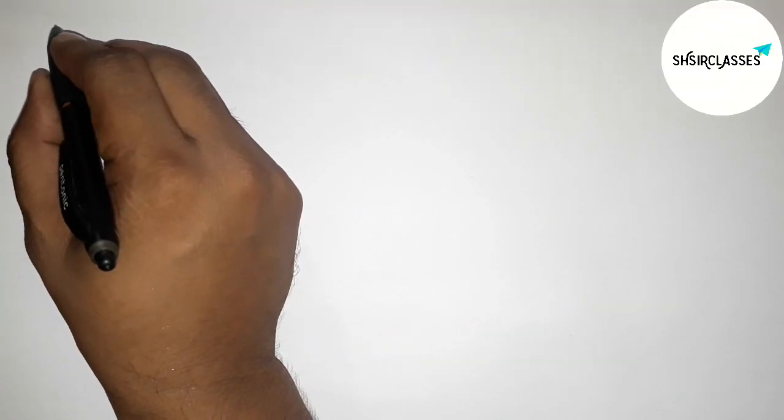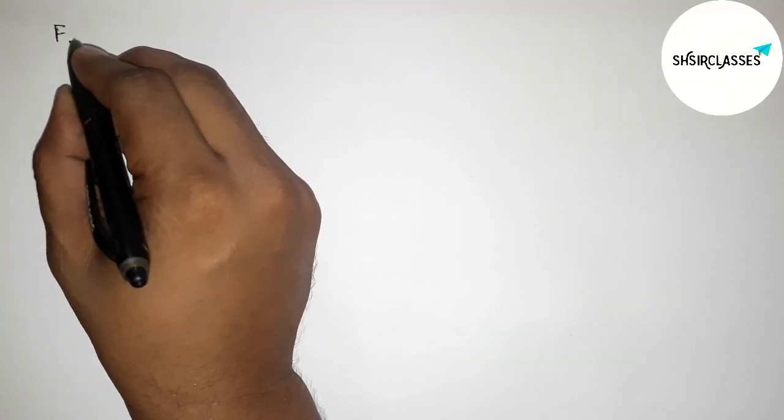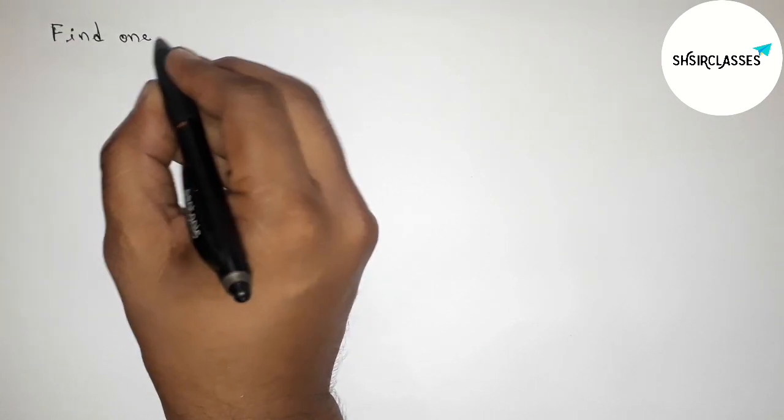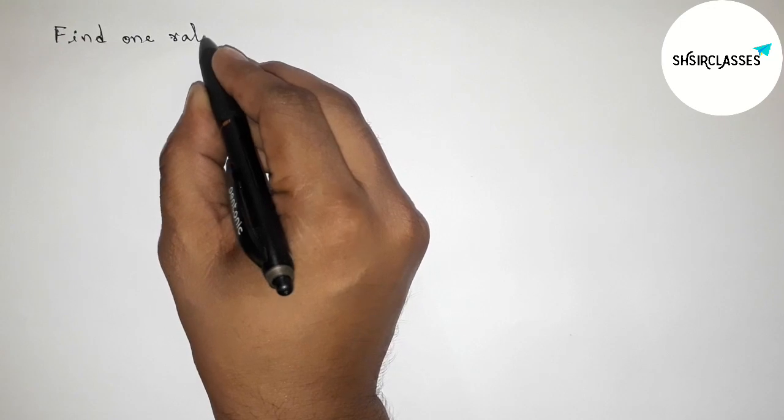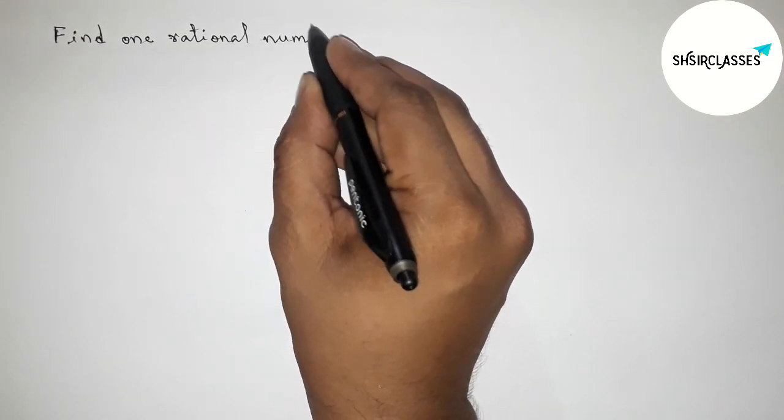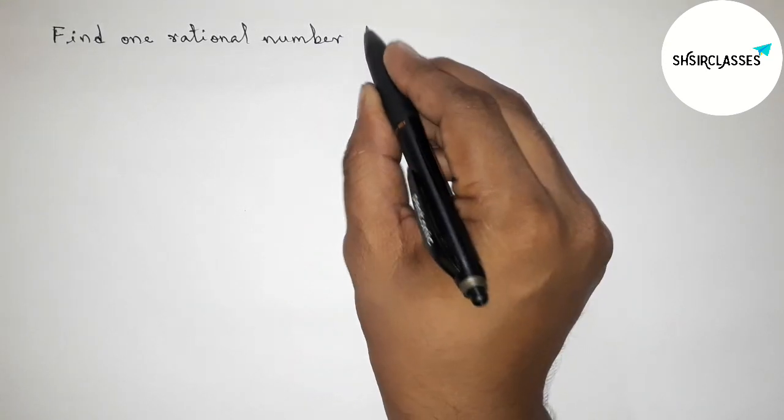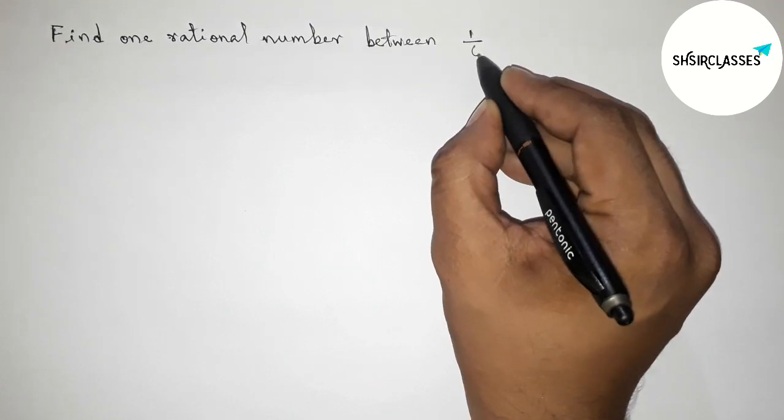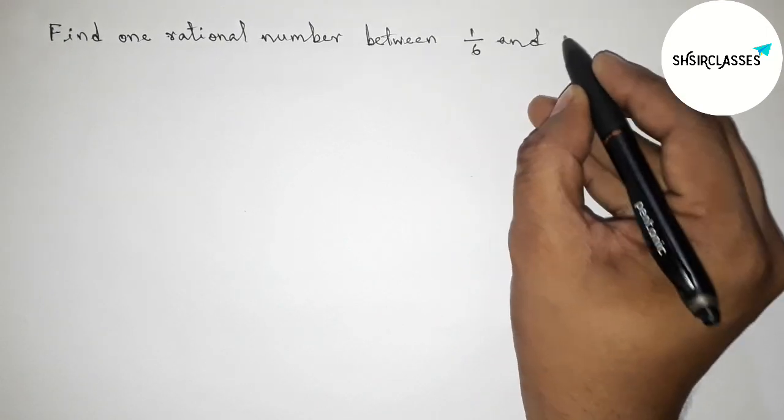Hi everyone, welcome to SI Share Classes. Today in this video, we have to find one rational number between 1/6 and 1/7 in an easy way. So please watch the video till the end. So let's start.